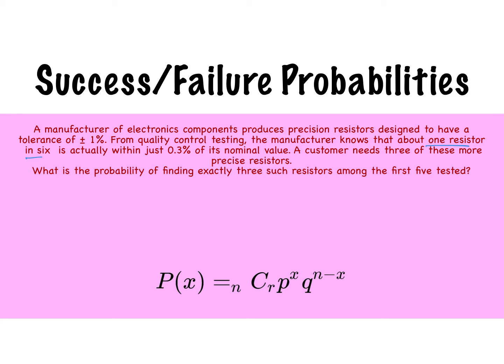A customer needs three of these more precise resistors. What is the probability of finding exactly three such resistors among the first five tested?